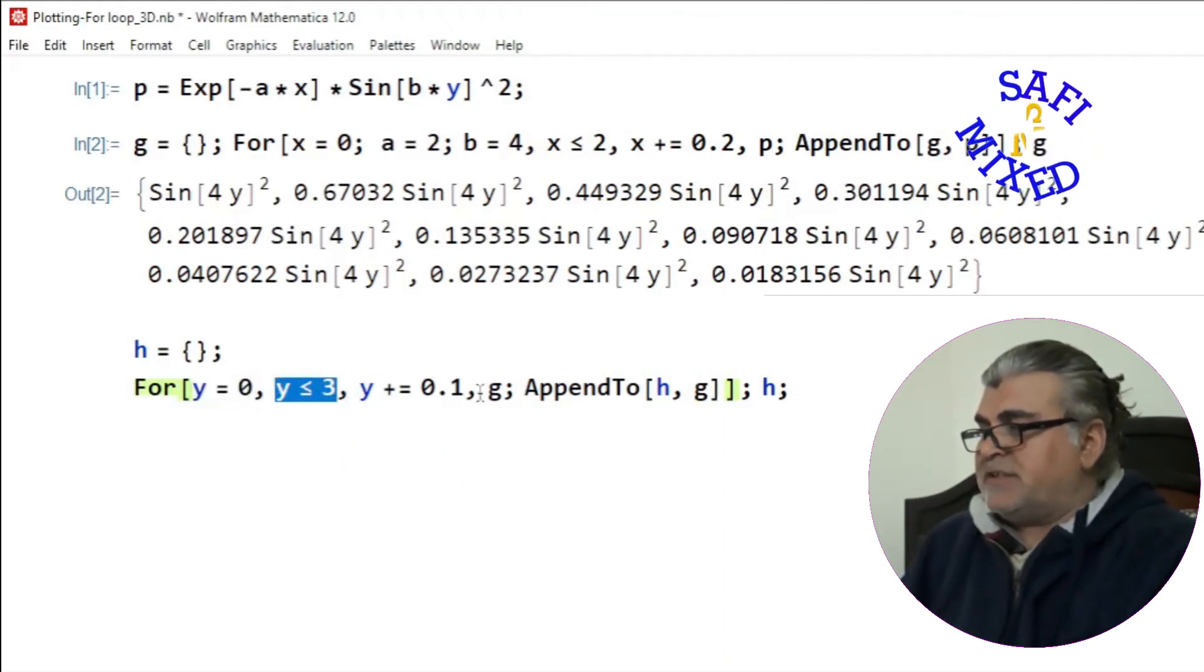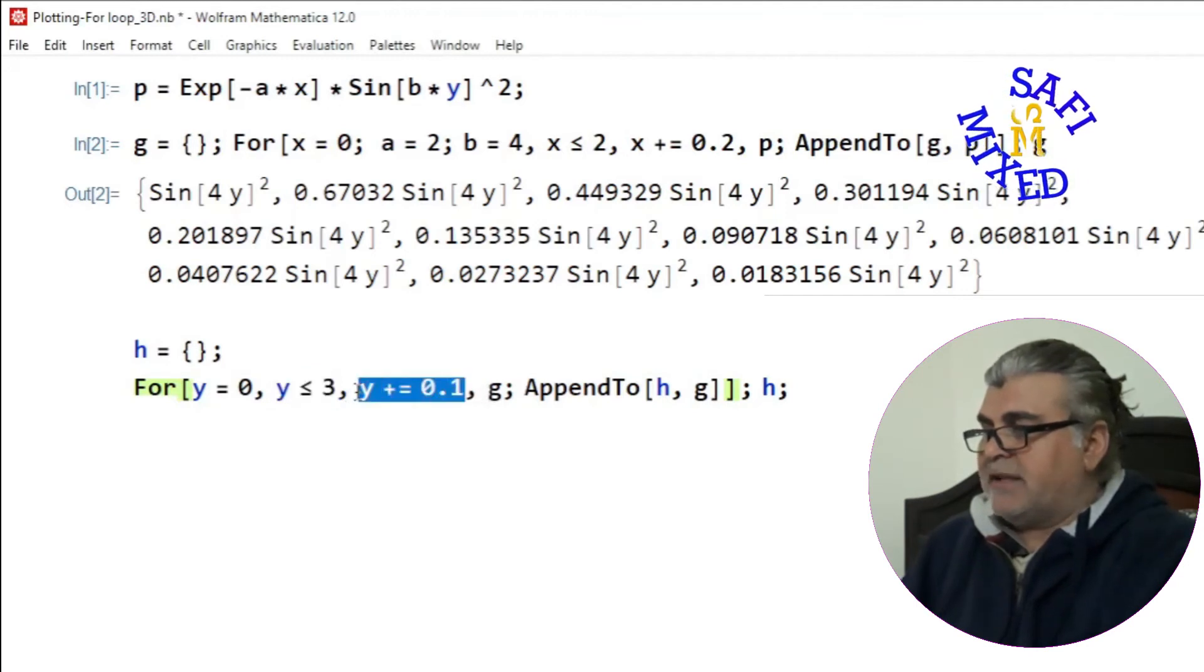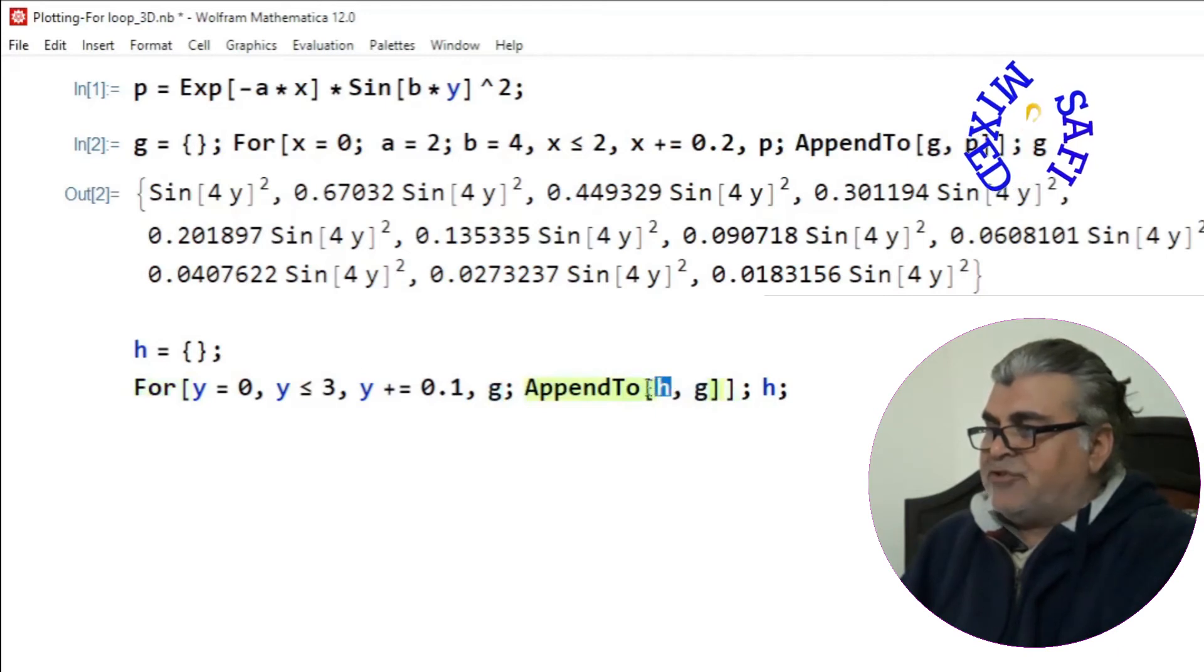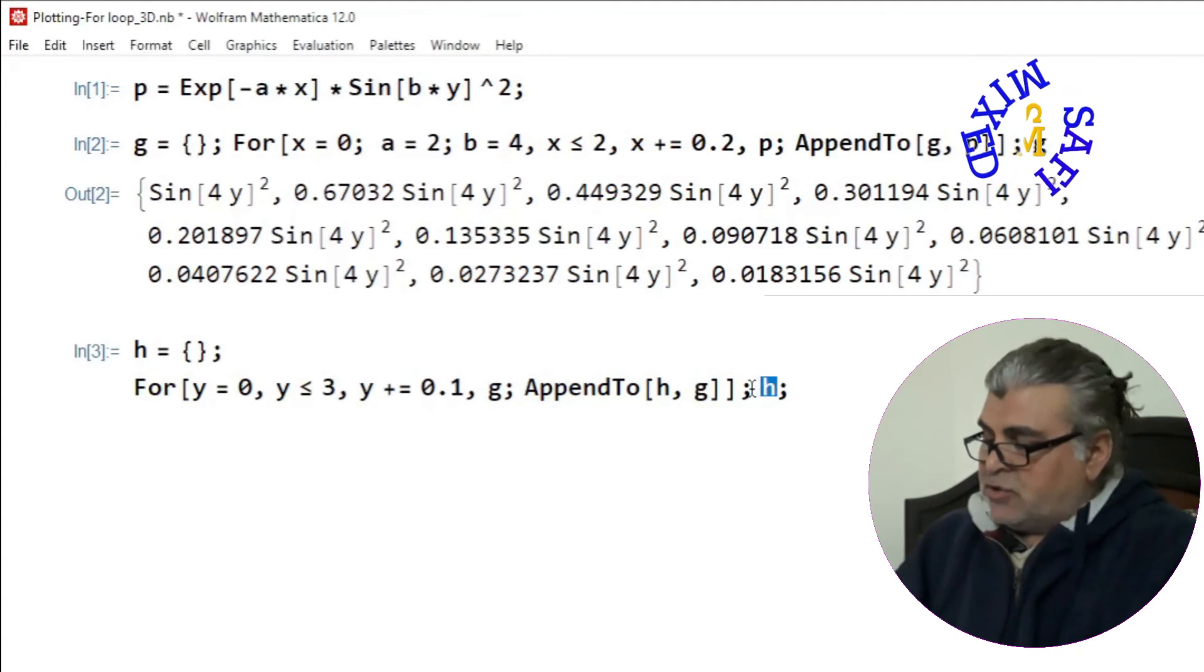And then I change the value of y with increment 0.1, and I ask Mathematica to generate the values of g with respect to y, and then I append the value of g to the empty list h. If I run this part, I'll get the value of h.